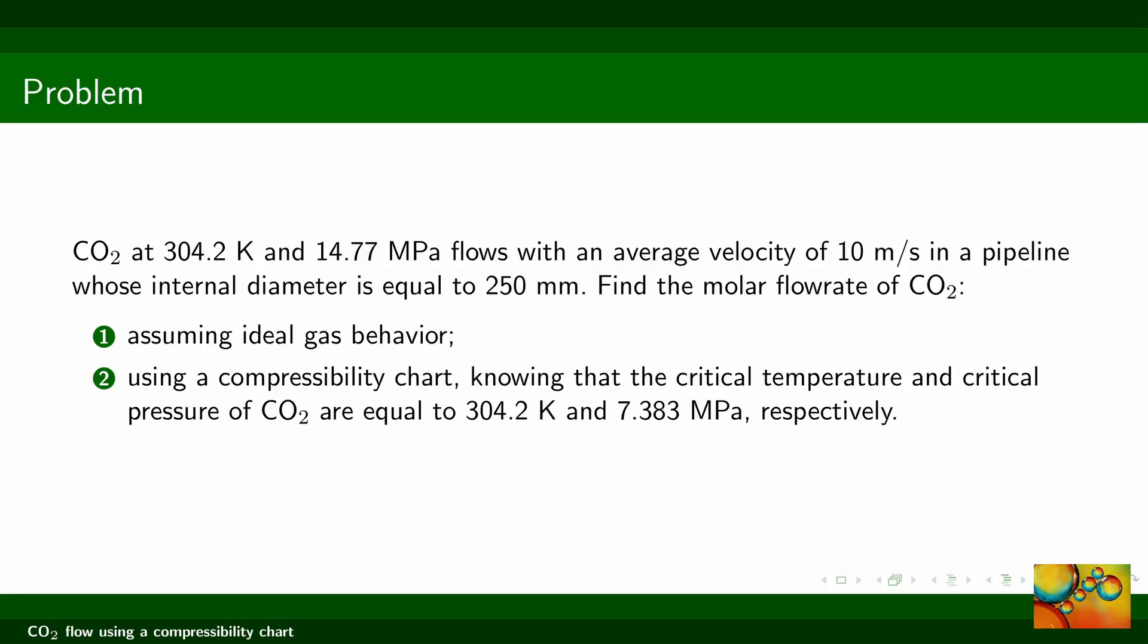Carbon dioxide at 304.2 kelvin and 14.77 megapascal flows with an average velocity of 10 meters per second in a pipeline whose internal diameter is equal to 250 millimeters. Find the molar flow rate of carbon dioxide assuming ideal gas behavior or using a compressibility chart, knowing that the critical temperature and the critical pressure of carbon dioxide are equal to 304.2 kelvin and 7.383 megapascal respectively.